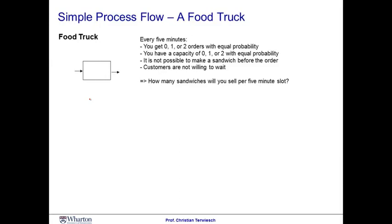Imagine you're working in a food truck. Say for sake of argument, that at any time slot of five minutes duration, you can get between zero, one, or two orders with equal probability. You also have a capacity of zero, one, or two orders. Now, it's not possible to make a sandwich before the order occurs, and customers are not willing to wait for the sandwich. How many sandwiches would you sell every five minutes? Well, previously we defined the flow rate as the minimum between demand and capacity.